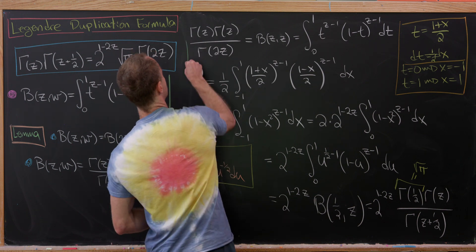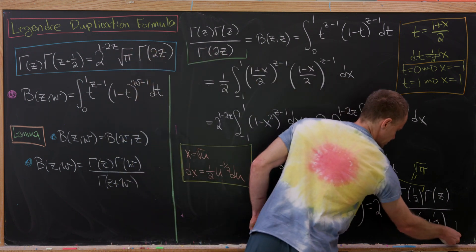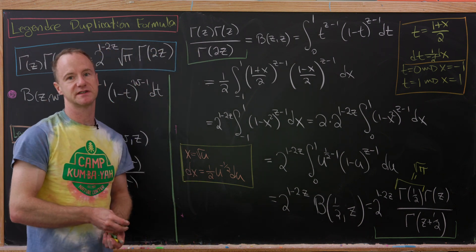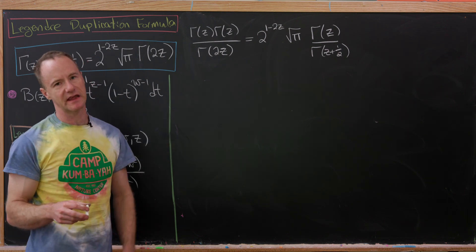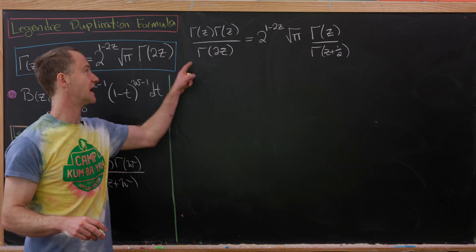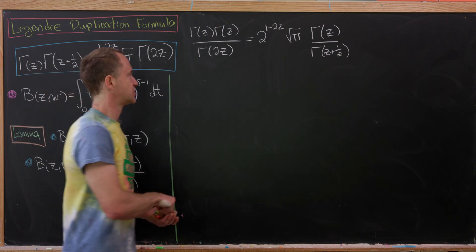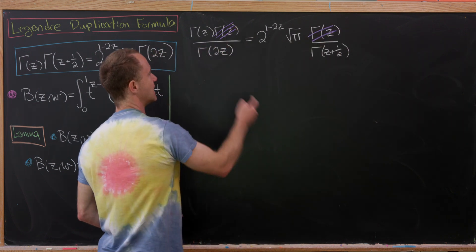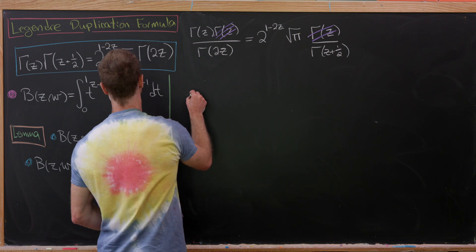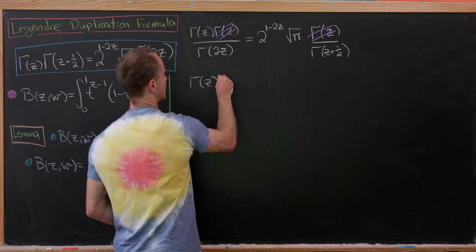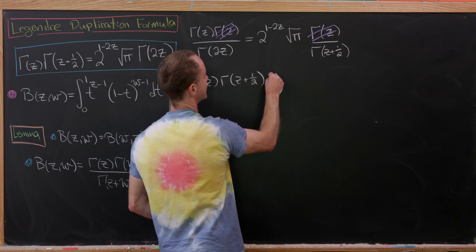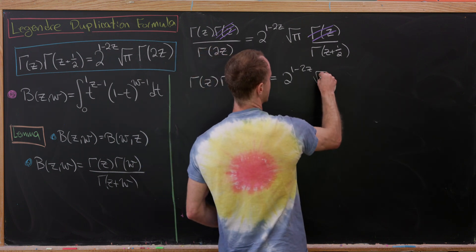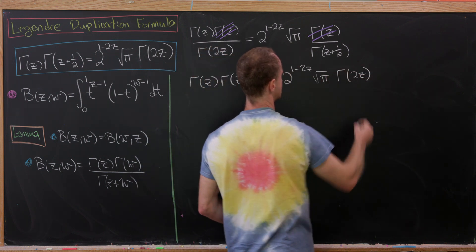Putting the left and right sides together — recalling that B(z,z) = Γ(z)²/Γ(2z) — we can cancel one factor of Γ(z) from both sides, then cross-multiply to obtain the Legendre duplication formula: Γ(z) · Γ(z + 1/2) = 2^(1-2z) · √π · Γ(2z).